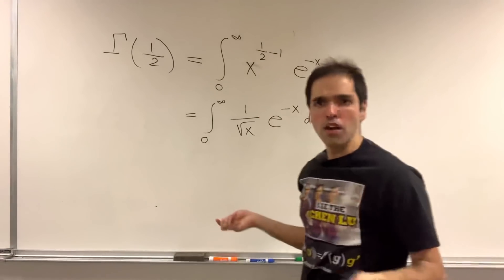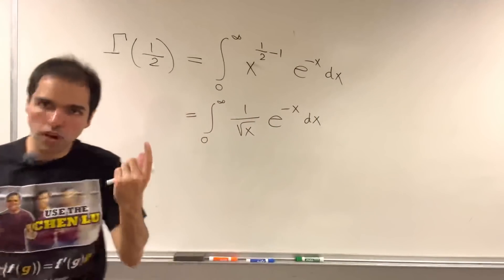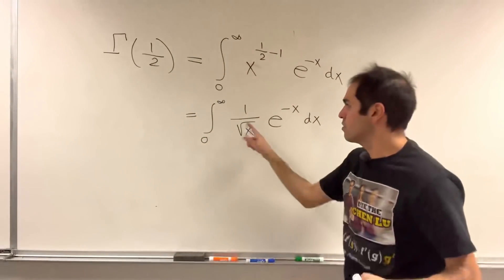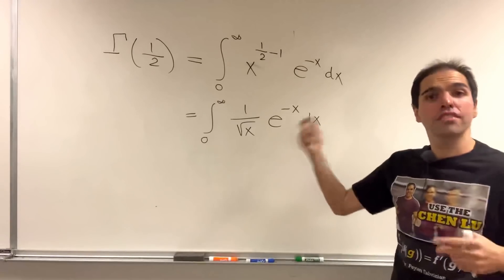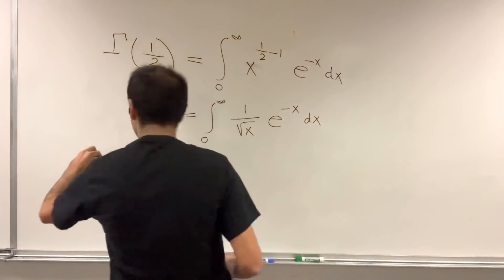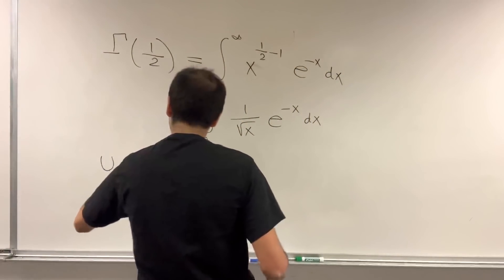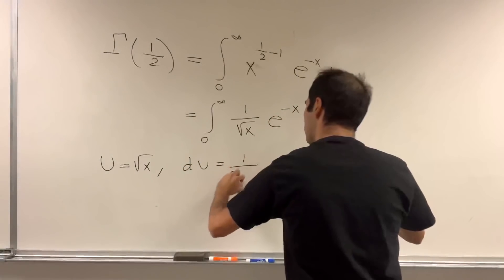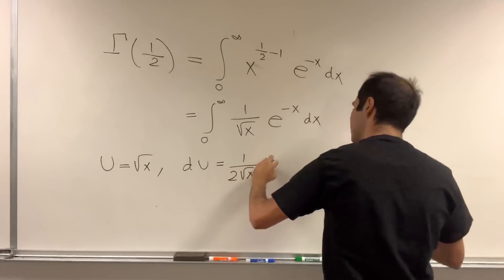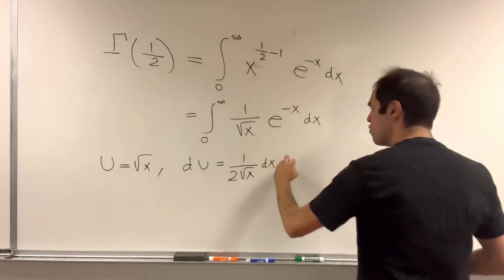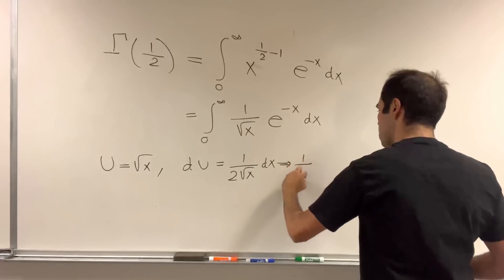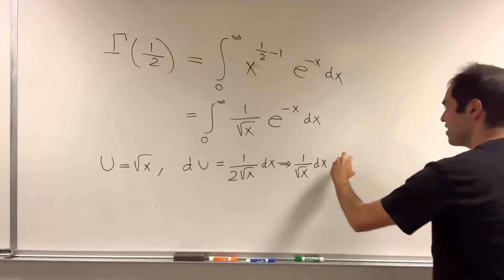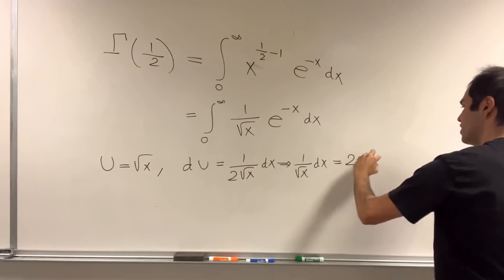And 1 over square root of x, it's almost the derivative of square root of x. Which suggests to use the following u substitution. Let u be square root of x. Then du is 1 over 2 square root of x dx. So, 1 over square root of x dx, this junk here is just 2 du.